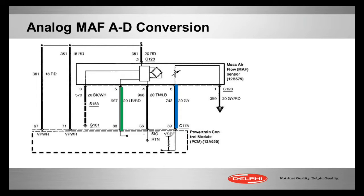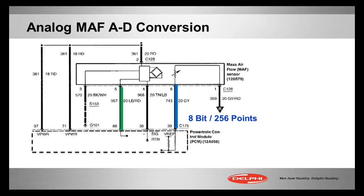The blue line is the intake air temp we saw before, and the green line illustrates the mass airflow — in this case, an analog output. So both are analog. Let's say they're both at 2.5 volts, for example. That's going to get changed into a digital signal. What does that is an A-to-D converter, or analog-to-digital conversion.